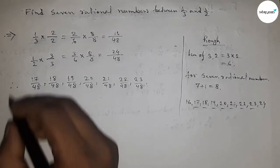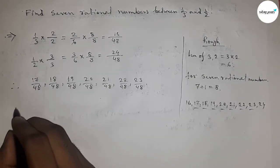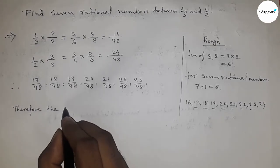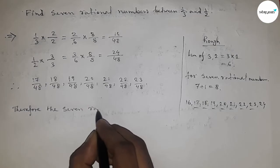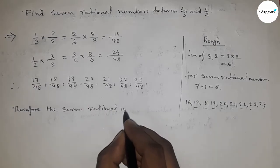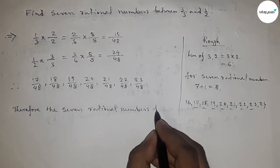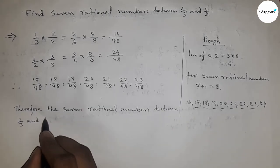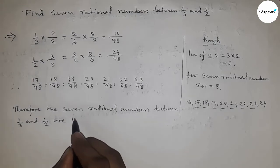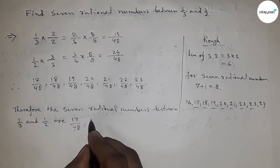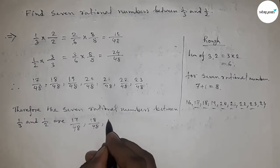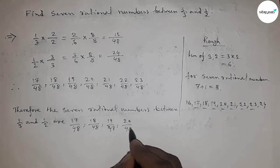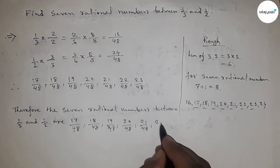Therefore, the seven rational numbers between 1 upon 3 and 1 upon 2 are: 17 by 48, 18 by 48, 19 by 48, 20 by 48, 21 by 48, 22 by 48, and 23 by 48.